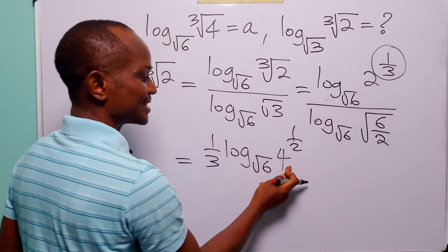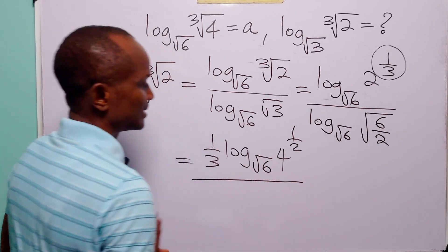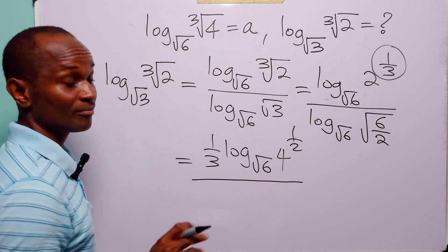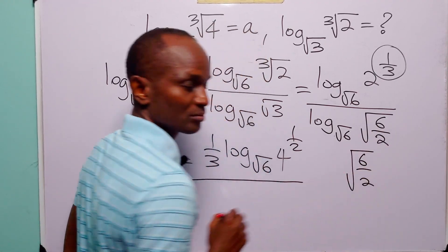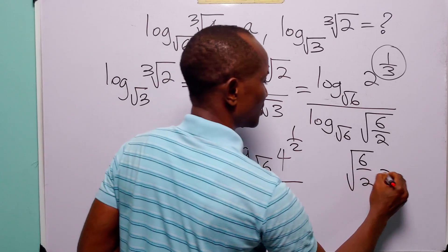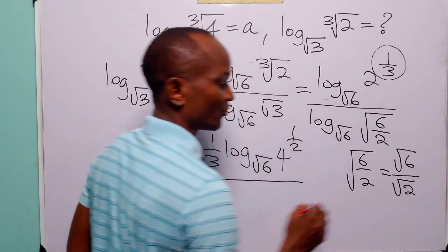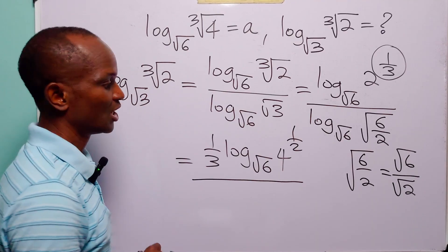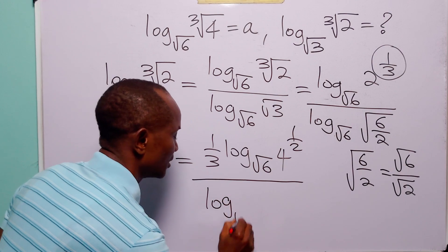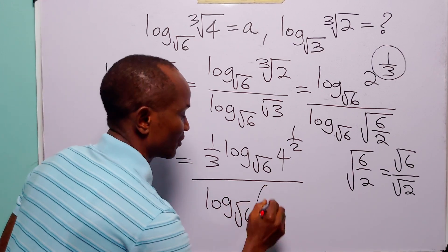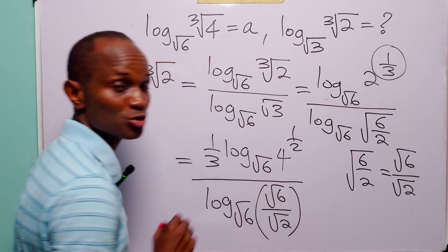In the denominator, recall that the square root of 6 over 2 equals the square root of 6 divided by the square root of 2, by the law of surds. So in the denominator we have log to base root 6 of root 6 over root 2.